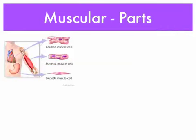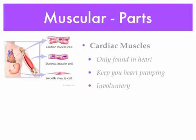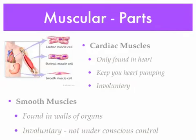There are three types of muscles: cardiac muscle, skeletal muscle, and smooth muscle. Cardiac muscle is only found in the heart — it keeps your heart pumping all the time and is involuntary; we don't think about our heart beating even when we sleep. Smooth muscles are found in the walls of organs, such as the stomach, and are also involuntary — we don't think about our stomach churning to help break down food.